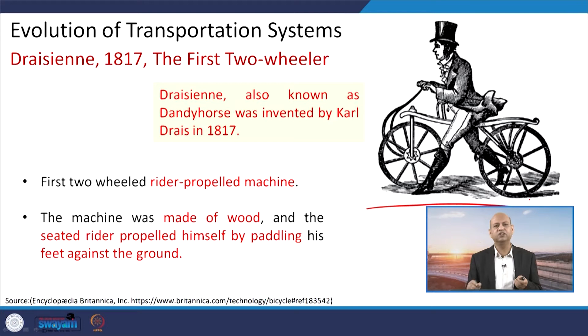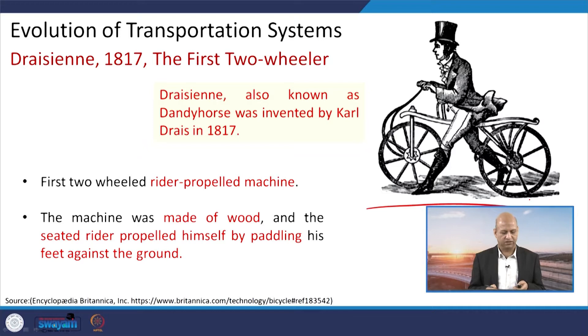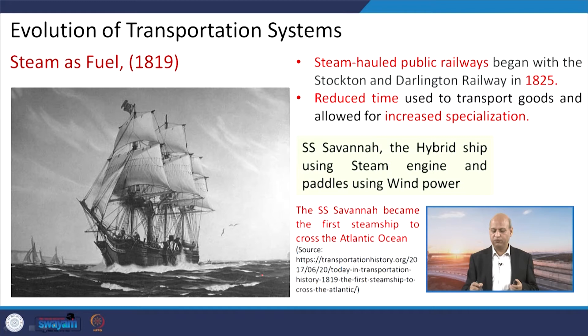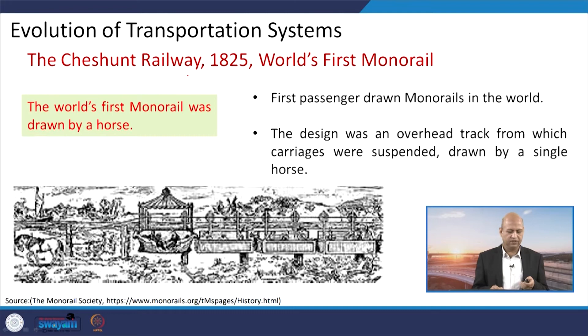At the same time, two-wheelers were invented. This was the initial design of the cycle — there was no chain, so by muscle power only, people would drag it and push themselves along, like children use a push scooter today. In between, steam as a fuel was used for powering ships, and steam-hauled public railways were also there. So land transportation as well as waterways transportation through ships and rivers were all there in parallel. In 1819, steam was used as the driving force for ships.